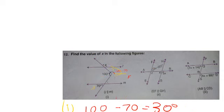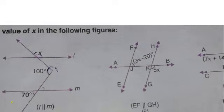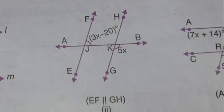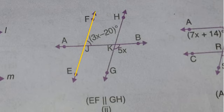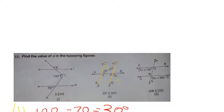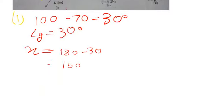Now for the second figure: EF is parallel to GH. One angle is 5x and the other is 3x minus 20. Since these are co-interior angles, their sum will be 180 degrees.